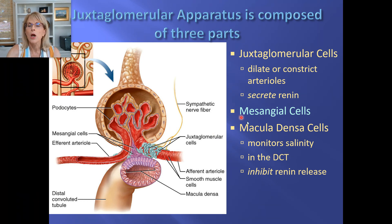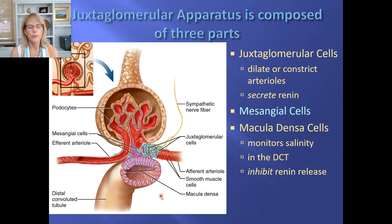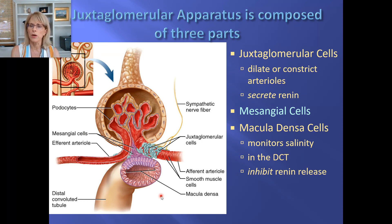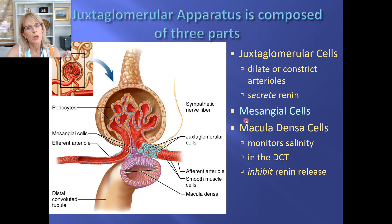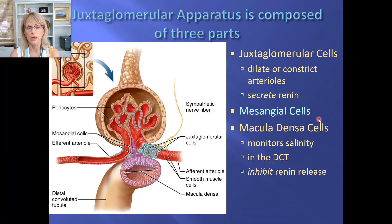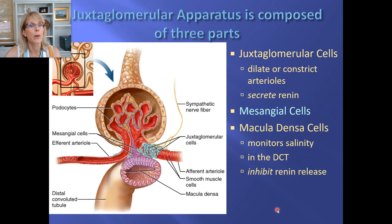Mesangial cells are a little baffling, but for those who work with geriatric or kidney failure patients, they're an important part of kidney failure. High blood pressure or type 2 diabetes can specifically trick the mesangial cells into creating scar tissue in the glomerulus itself. They end up being very important, but we won't discuss them further in this course.